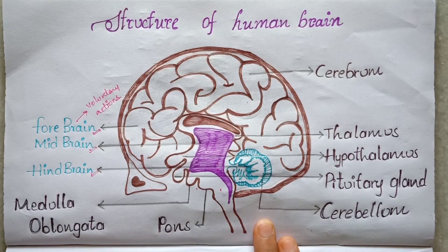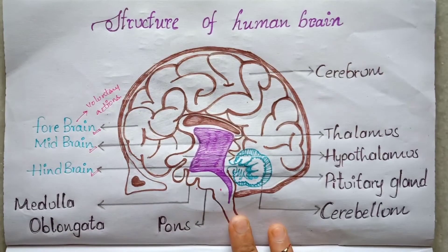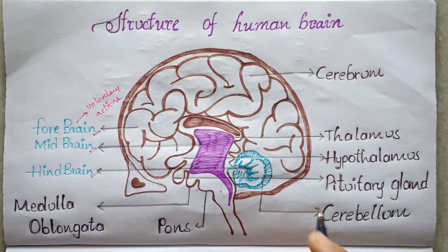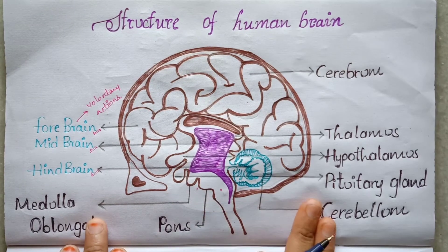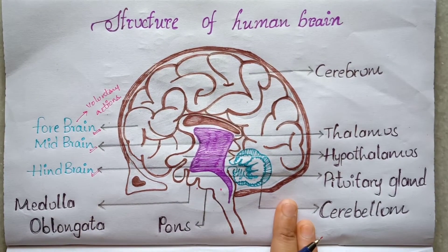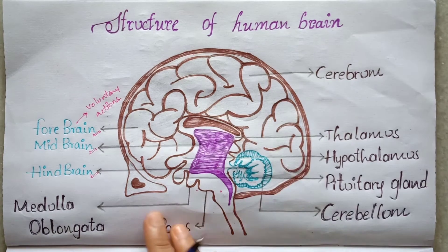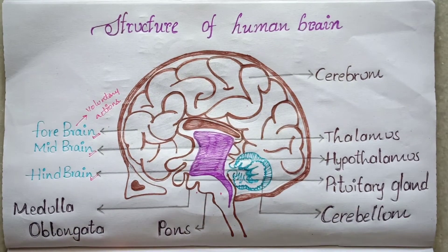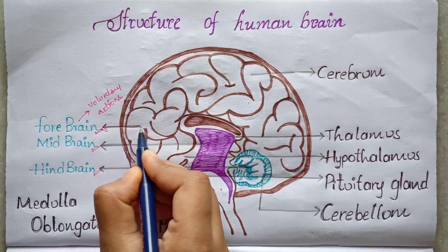With the help of the forebrain, we can think, write, or feel sensations like cold or heat. We can walk or talk to someone. We can also improve our mental abilities with the help of the forebrain. Simply, forebrain performs the voluntary actions.